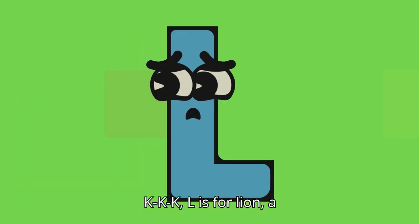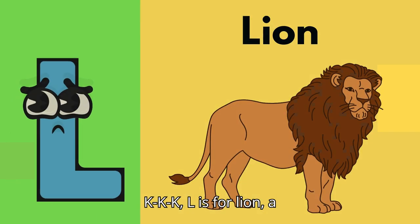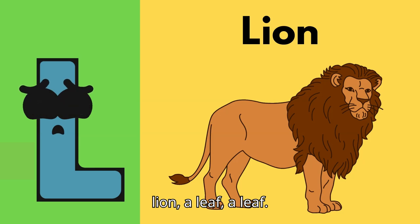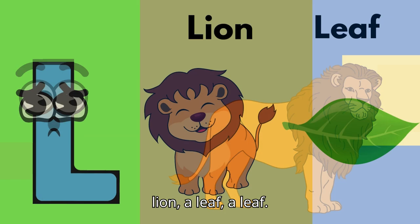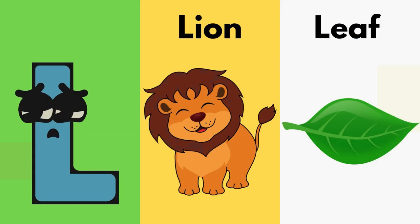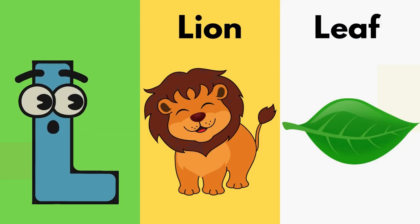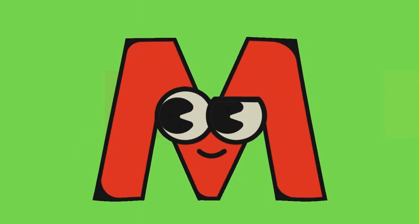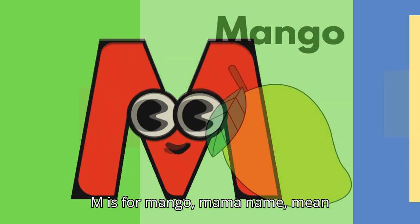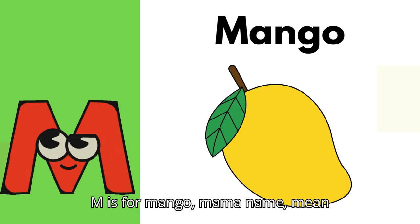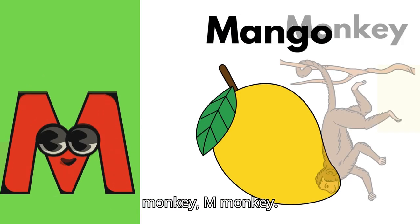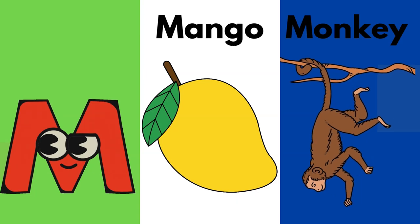L is for lime. A lion. A-la-leaf, a leaf. M is for mango. Monkey, and monkey.